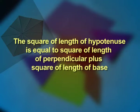Pythagoras theorem states that the square of the length of the hypotenuse is equal to the square of the length of the perpendicular plus the square of the length of the base.